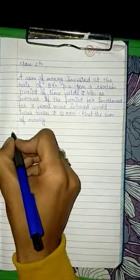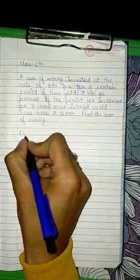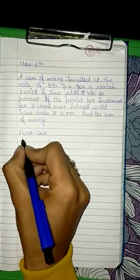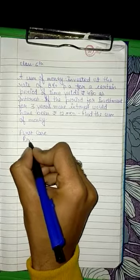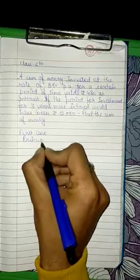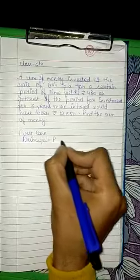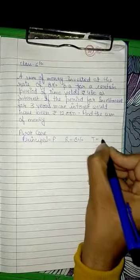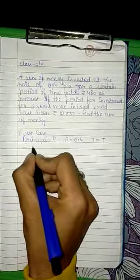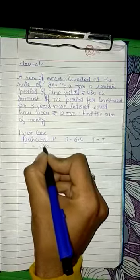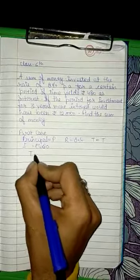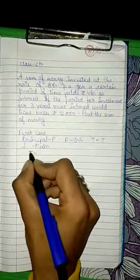In the first case, let the principal be P, rate is given as 8%, time equals T, and interest is equals to 480. We need to find out the time, as time is changing in the second case.